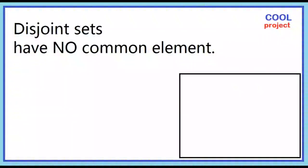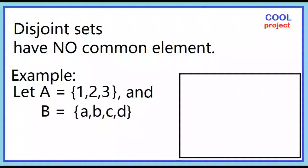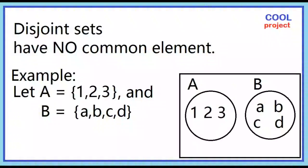Disjoint sets have no common element. Example: Let set A contain 1, 2, 3 and set B contain A, B, C, D. Sets A and B have no common element. Sets A and B are disjoint sets.